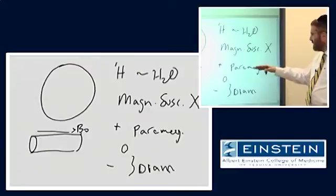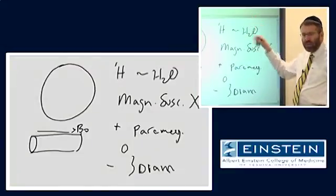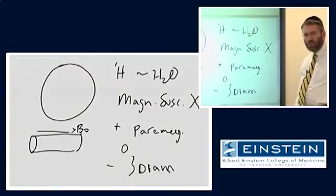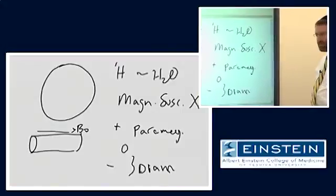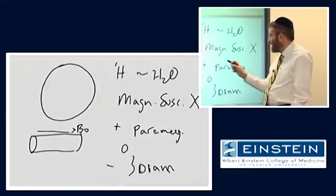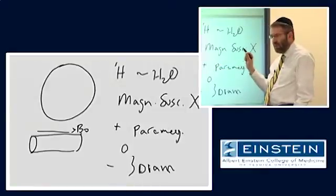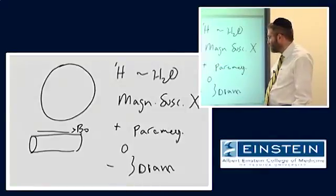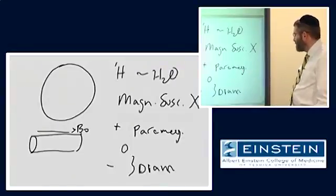There are other classifications, such as superparamagnetic and ferromagnetic, which have even greater degrees of magnetic susceptibility and have to do with other features of the substance, besides strictly the magnetic susceptibility of the element or substance per se.